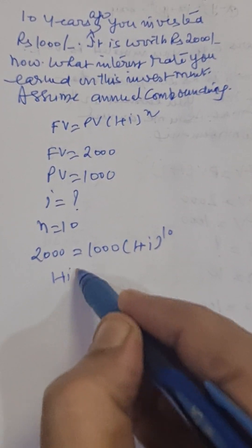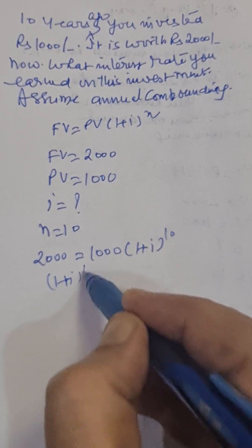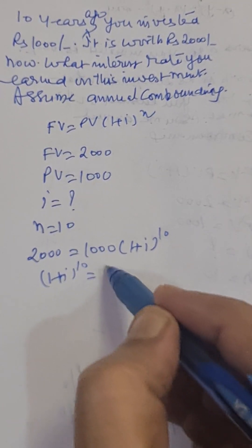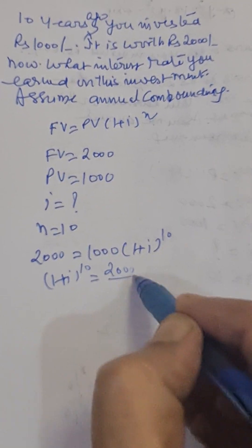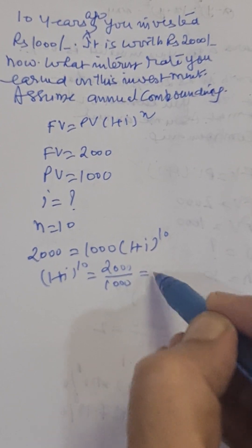So we can write one plus I raise to the power ten equal to two thousand divided by one thousand and this is equal to two.